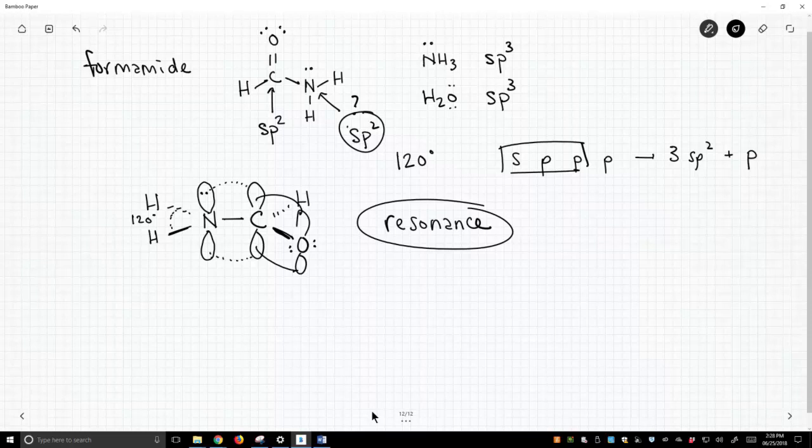So, in general, yes, lone pairs on atoms prefer to be in a hybrid orbital. But if they're next to another p orbital, the lone pairs want themselves to be in a p orbital. And we'll see many, many examples that follow this idea.